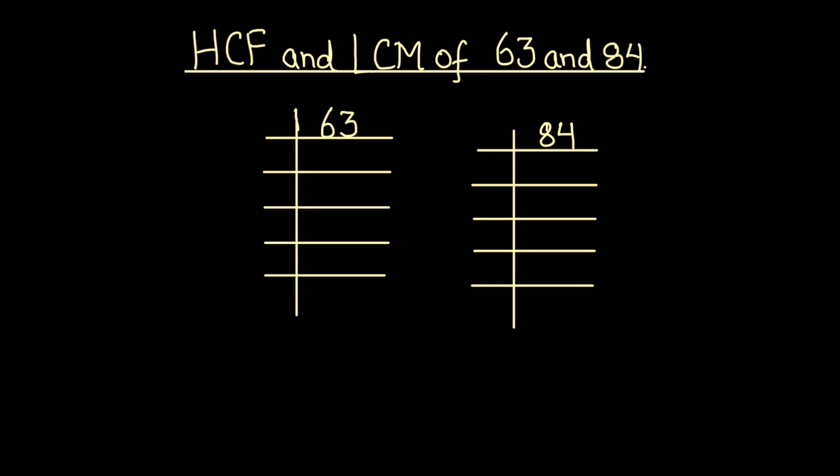So as 63 is an odd number, let's use 3 to divide the number 63. 3 times 2 is 6, 3 times 1 is 3. Again we can divide 21 by 3, 3 times 7 is 21 and 7 is a prime number, it is only divisible by 7. 7 times 1 is 7.